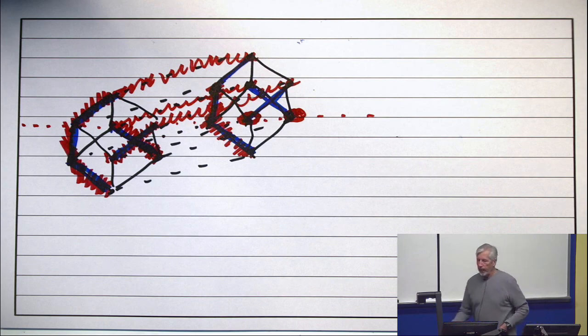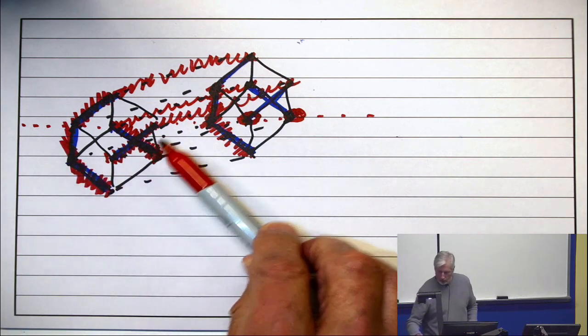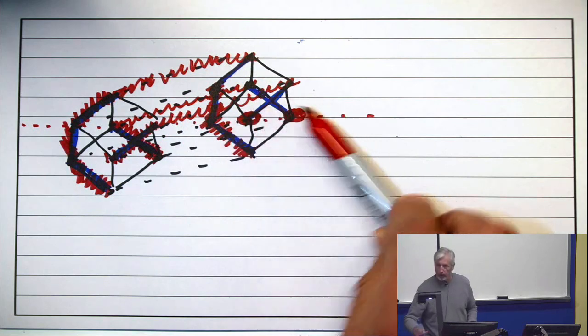So how many chains do I have all together? One, two, three, four, five, six, the right number.